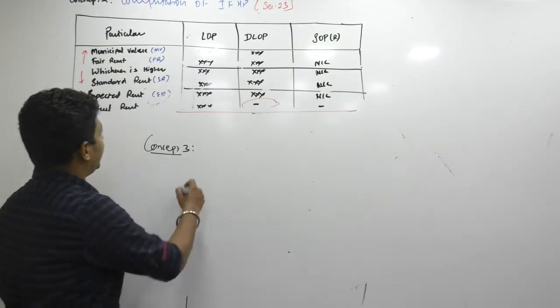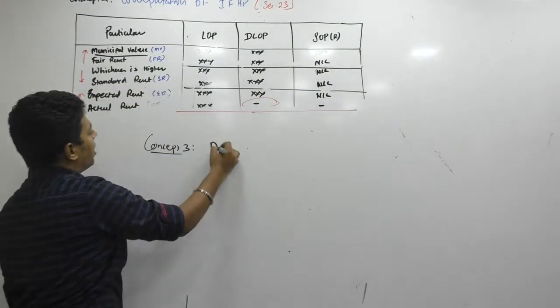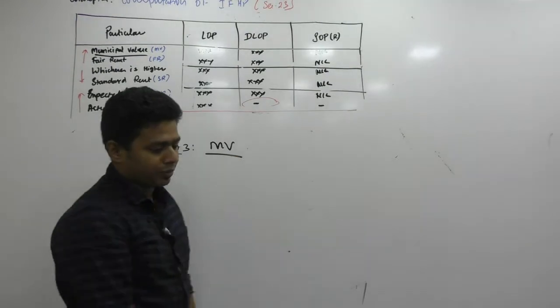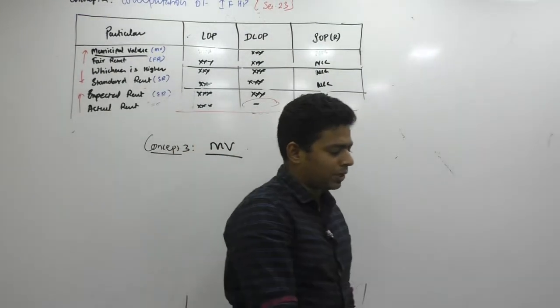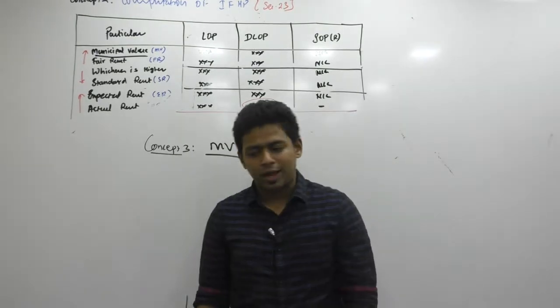Alright, next concept, concept 3. Concept 3 will be Municipal Value. Give the heading Municipal Value. Only two, two line concepts now. Concept 3, Municipal Value.